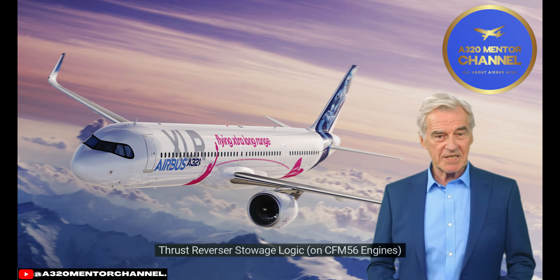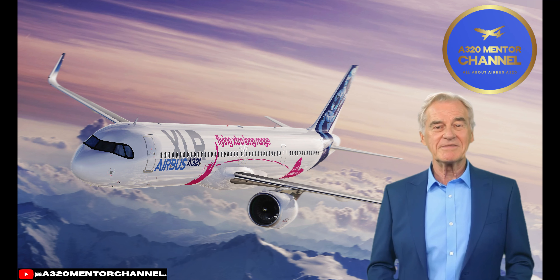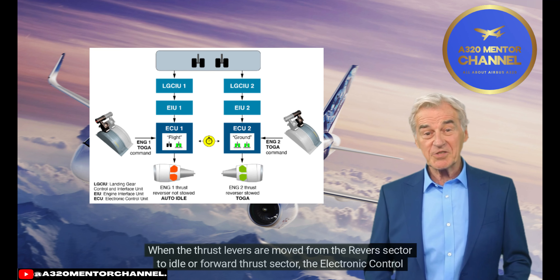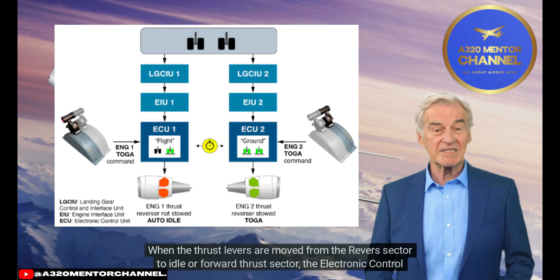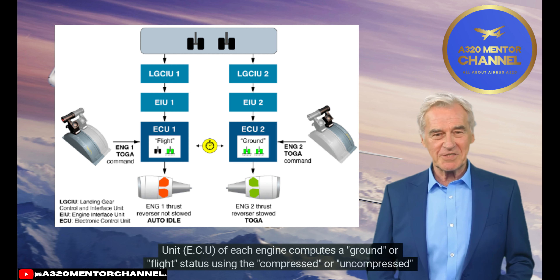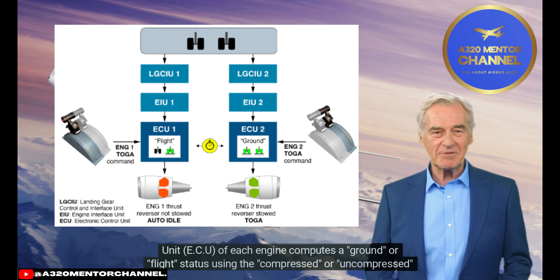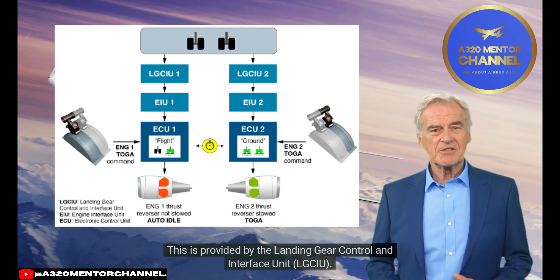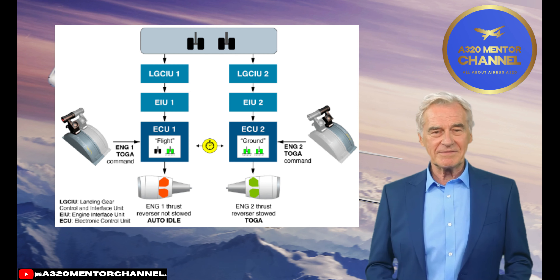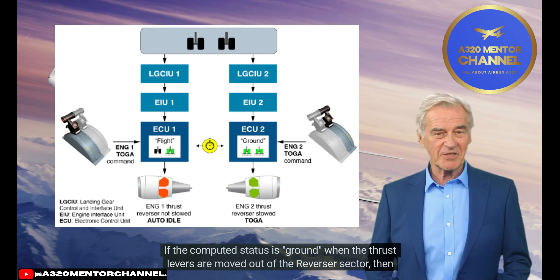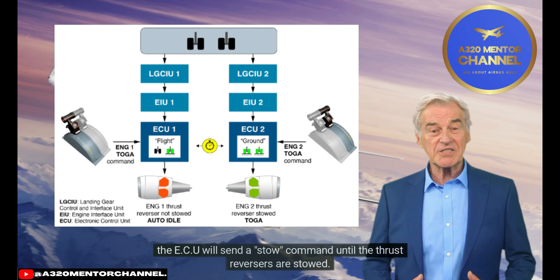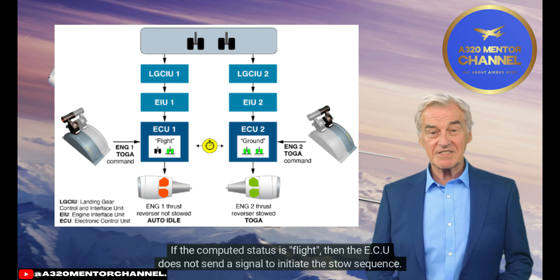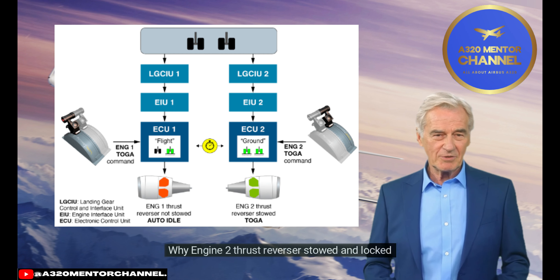Thrust reverser stowage logic on CFM-56 engines: When the thrust levers are moved from the reverse sector to idle or forward thrust sector, the Electronic Control Unit (ECU) of each engine computes a ground or flight status using the compressed or uncompressed status of the left and right main landing gear. This is provided by the Landing Gear Control and Interface Unit (LGCIU). If the computed status is ground when the thrust levers are moved out of the reverser sector, then the ECU will send a stow command until the thrust reversers are stowed. If the computed status is flight, then the ECU does not send a signal to initiate the stow sequence.